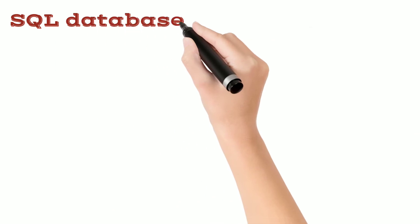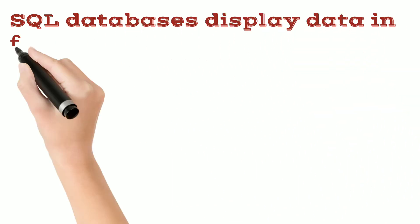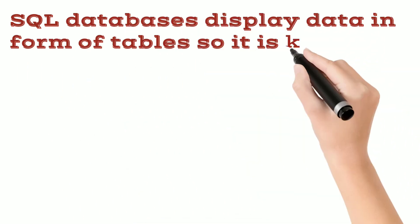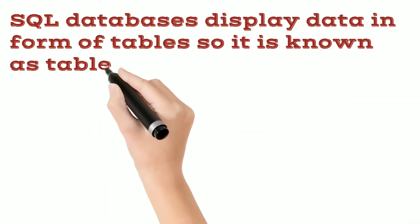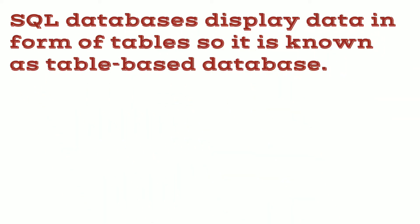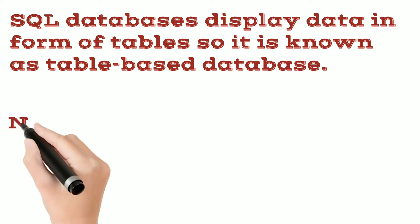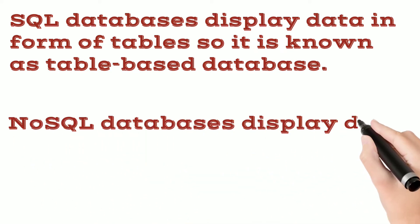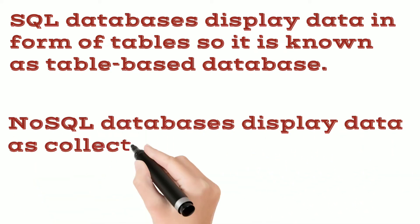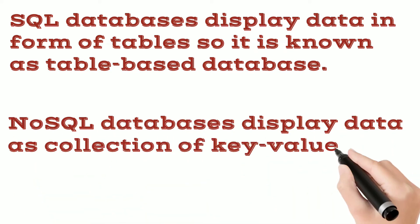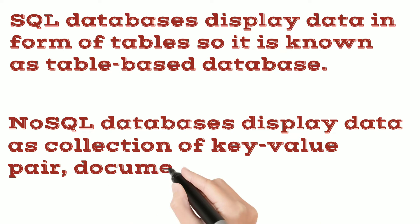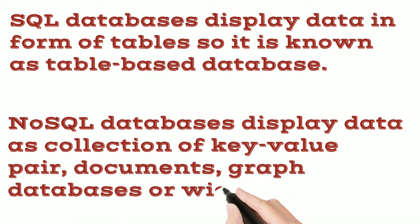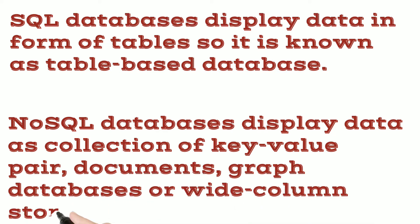SQL databases display data in the form of tables, so it is known as a table-based database. While NoSQL databases display data as a collection of key-value pairs, documents, graph databases, or wide column stores.